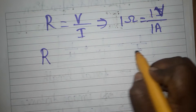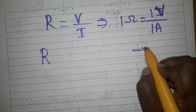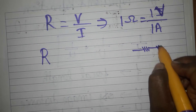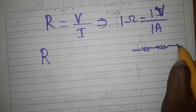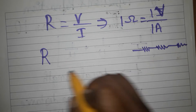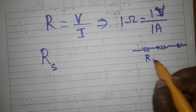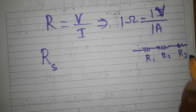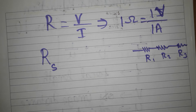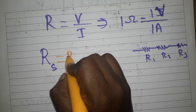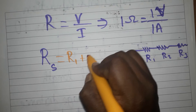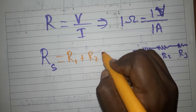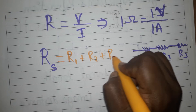In case of resistances in series — two or three resistances in series — the total resistance is equal to R1 plus R2 plus R3. You simply add all the resistances to get the total resistance.